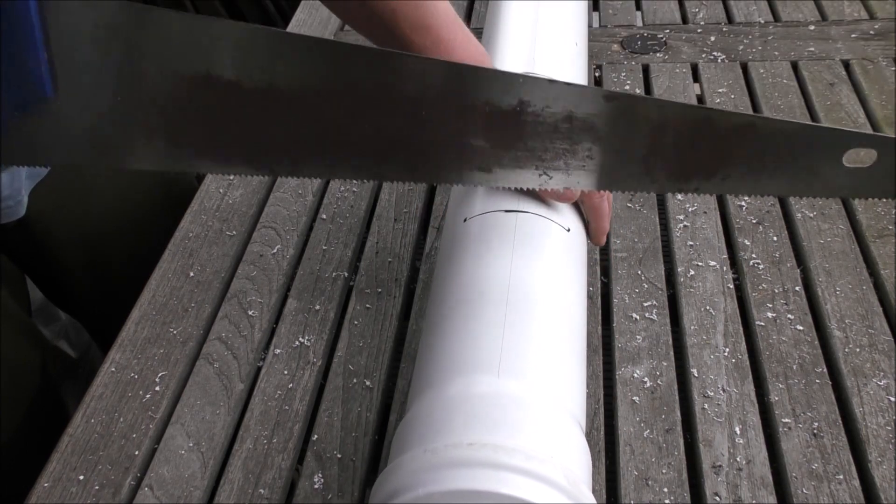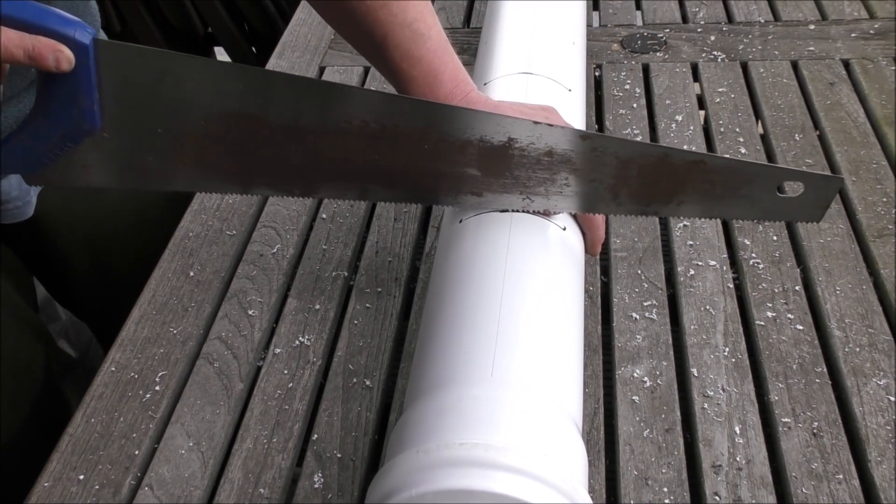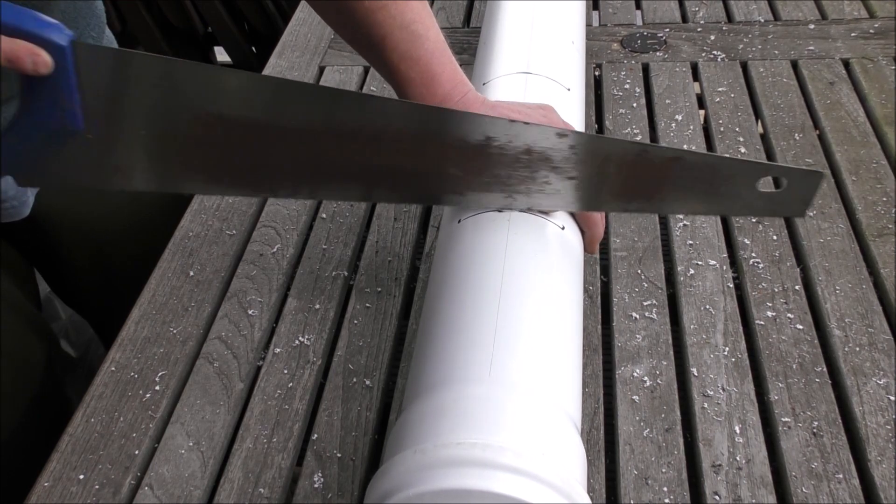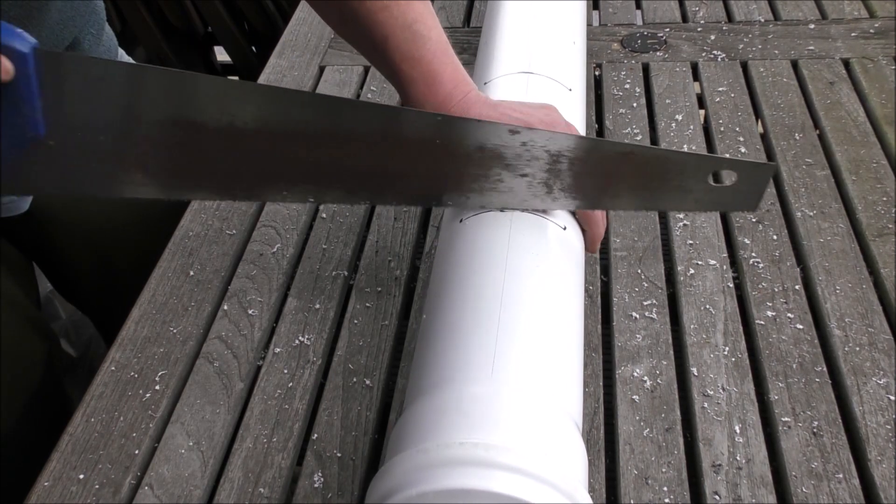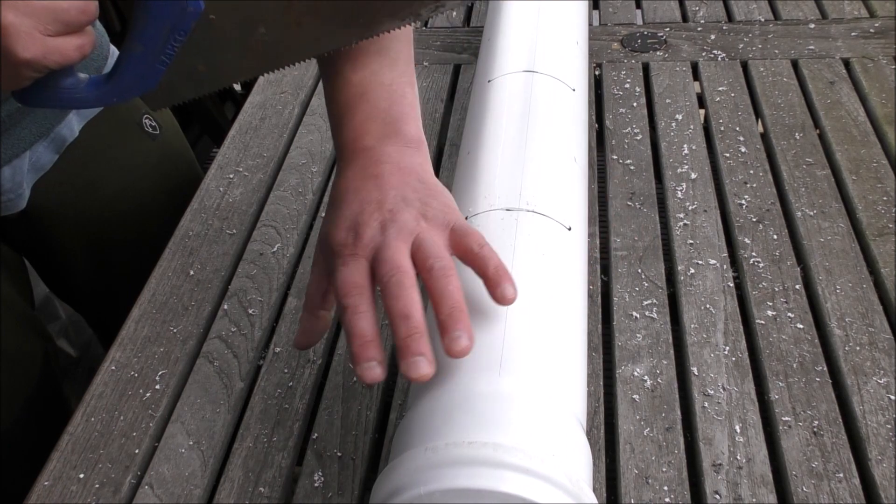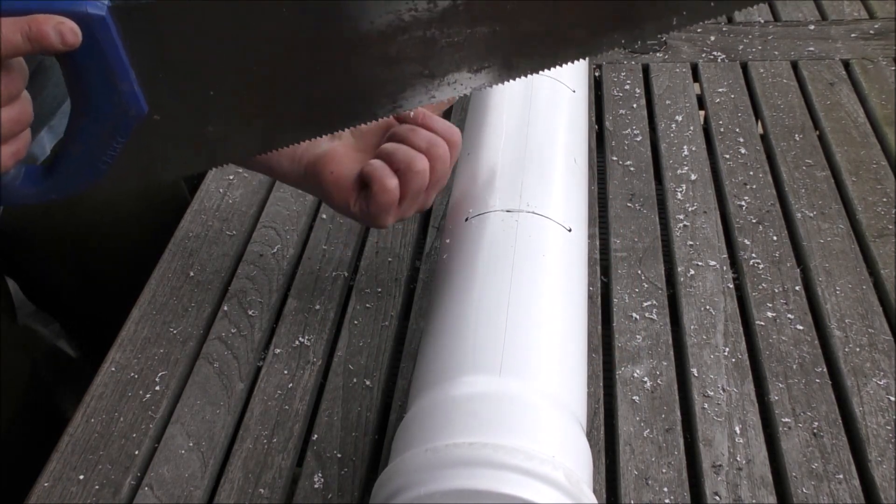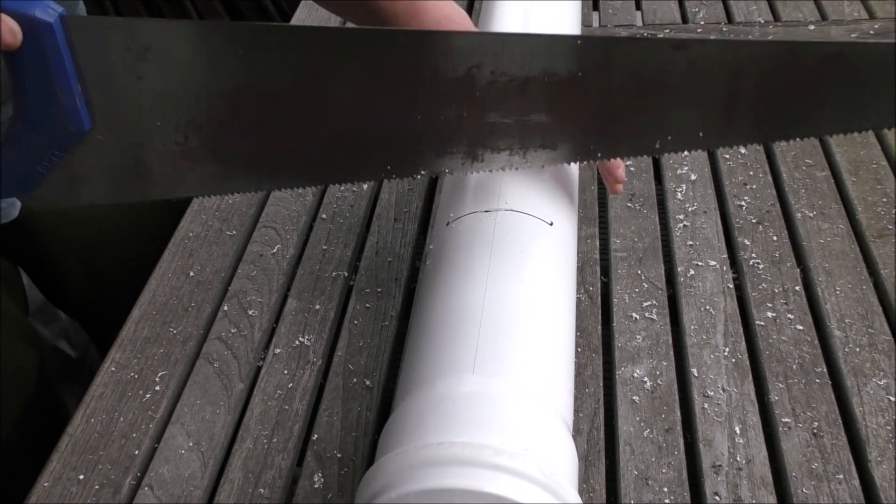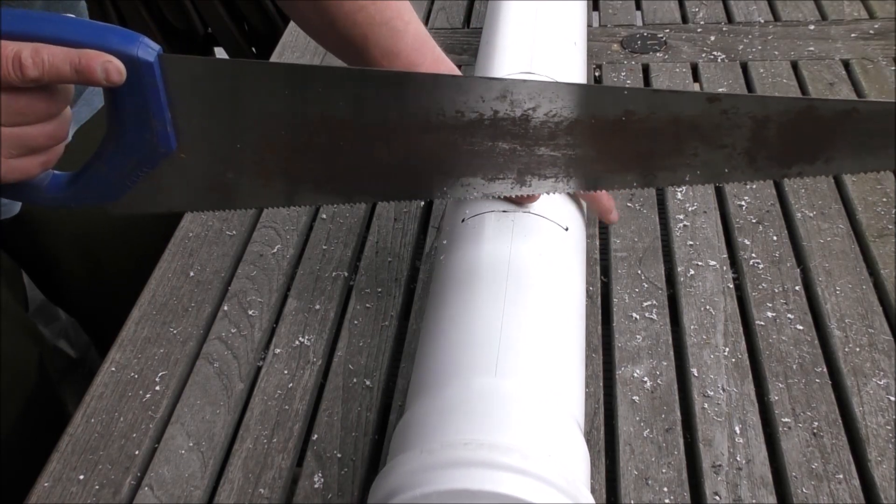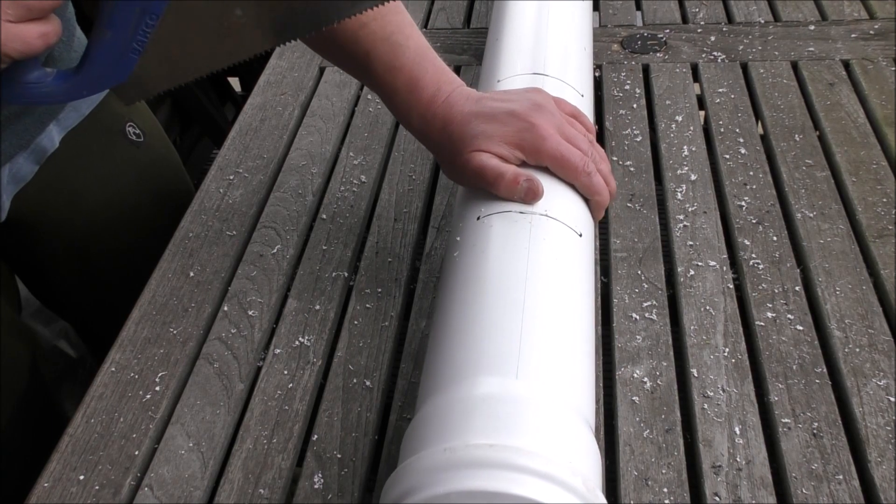This would be easier if you could put it in some sort of vice. Your open end of the pipe over there, if you could clamp that to the table, that would stop it rocking about. If you don't have a clamp, you've just got to have a good grip.